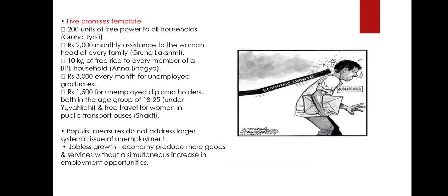Let us begin with the promises made by the Congress Party. The Congress Party is going to use a five-promises template in upcoming assembly elections — a strategy previously used in Karnataka. The five guarantees were: first, 200 units of free power to all households; second, Rs. 2,000 monthly assistance to women heads of families; third, 10 kg of free rice to every BPL household member; fourth, Rs. 3,000 monthly for unemployed graduates; and fifth, Rs. 1,500 monthly for unemployed diploma holders aged 18 to 25, plus free travel for women in public transport buses.